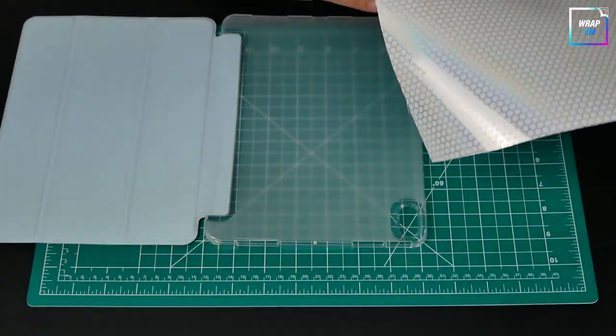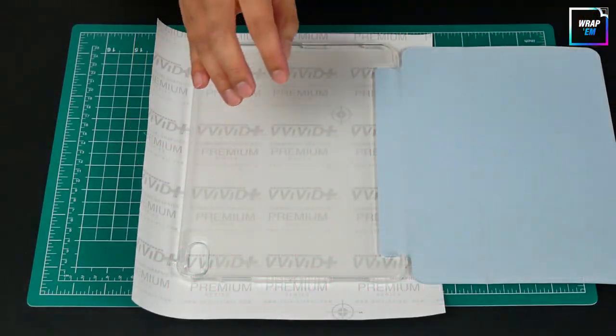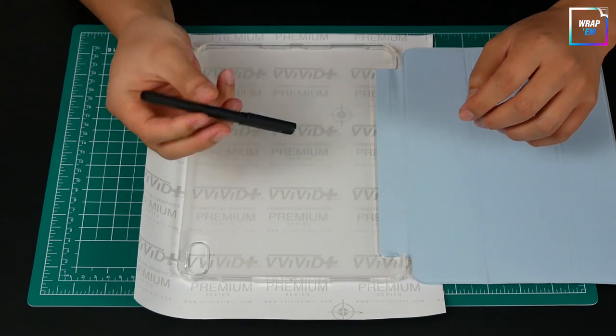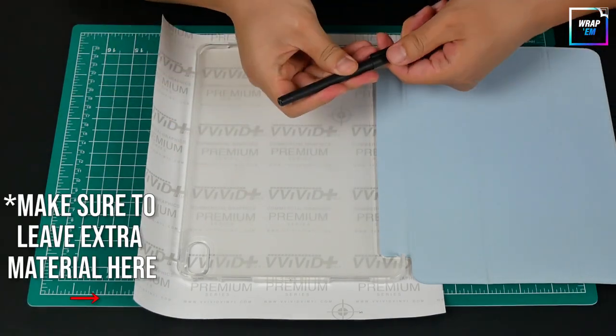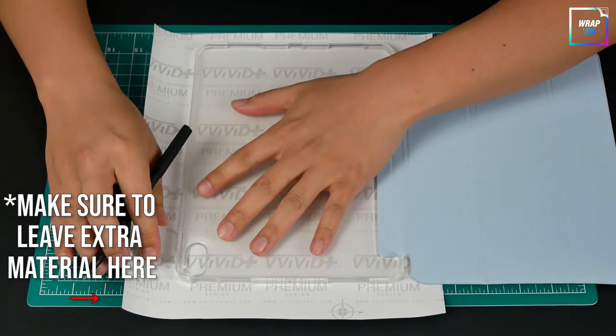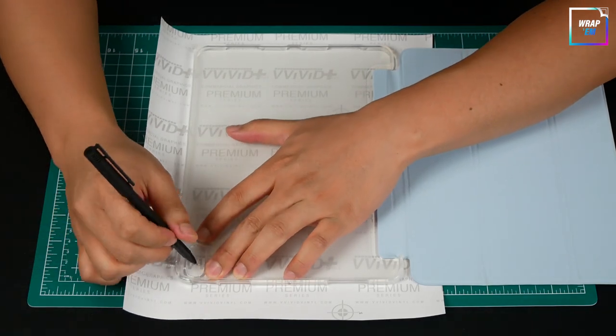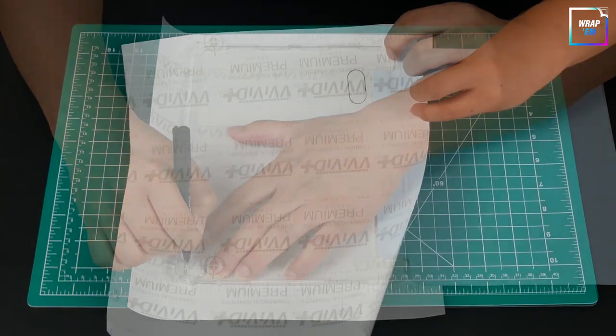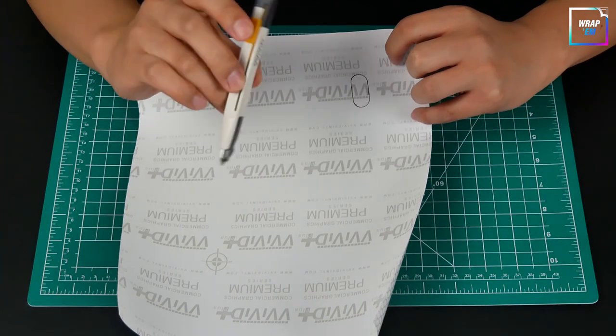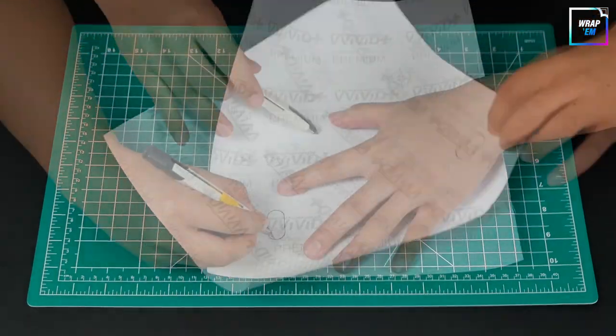We're gonna use this case's camera opening to make a camera cutout on the vinyl. Grab a pen and using the case as a guide, draw the camera outline on the paper back. Now grab a knife and make a cut along the oval's outline.